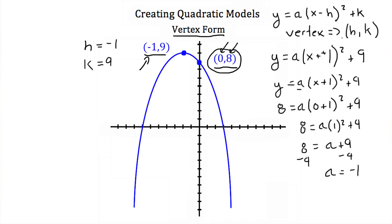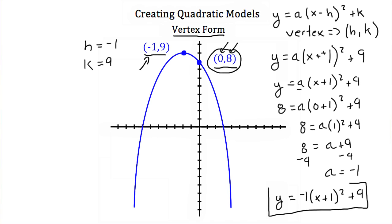So if we go and plug that back in, we get y is equal to negative 1 times x plus 1 squared plus 9. So this is the equation that describes this graph.